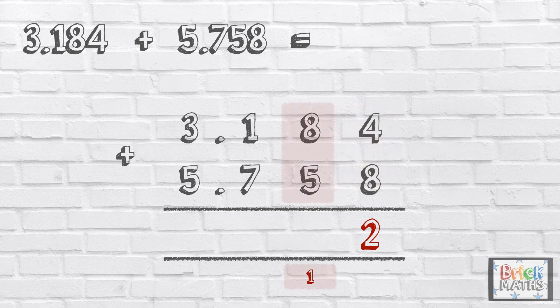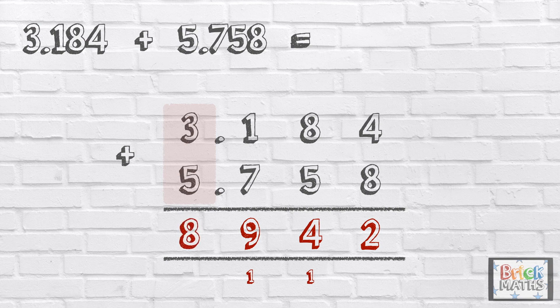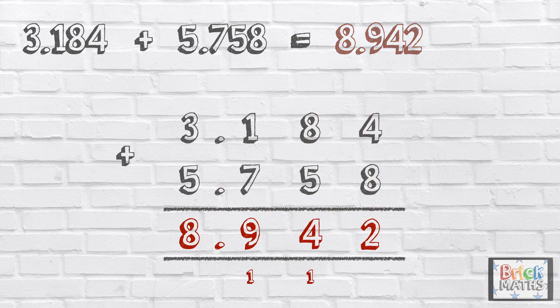We carry the one hundredth below in the hundredths column. So now we add the hundredths: eight add five add one, which is fourteen hundredths. We carry the one tenth below in the tenths column. So now we can add the tenths: one add seven add one, which is nine. Then finally we have the ones: three add five, which is eight. Make sure you put the decimal point in the correct place. So the answer is eight point nine four two.